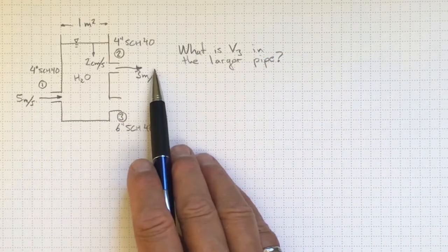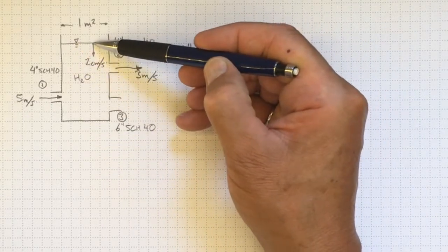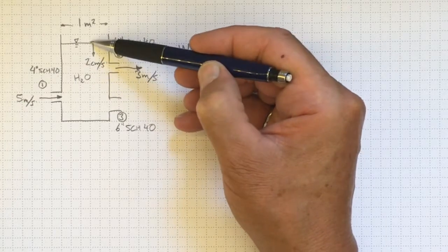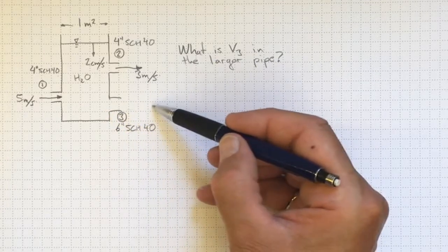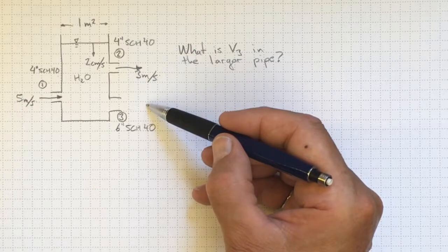So, a net inflow and yet the surface of the tank is still dropping by 2 centimeters per second. It's losing volume and that's because there must be quite a bit of flow coming out through this 6-inch Schedule 40 pipe down here.